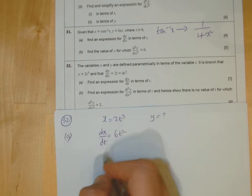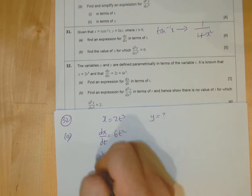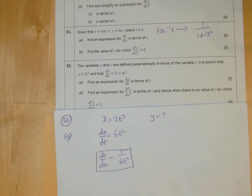And remember, when we get dx dt with parametric differentiation, it's always good to write the reciprocal about dt dx. So flip that. It's always useful, always handy to do that.